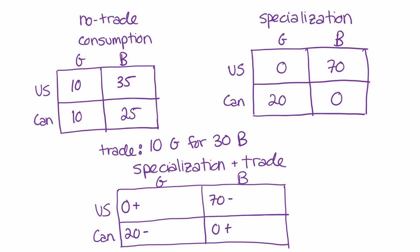And we say the US, because they are not making any guns, they're going to be on the receiving end of the guns. So we add 10 guns here. Canada is exporting the guns, so we subtract 10 guns here. Because Canada is not making any butter, they're on the receiving end of the butter. So we put plus 30 butter here. And of course, the US is the one exporting the butter, so we subtract 30 here.